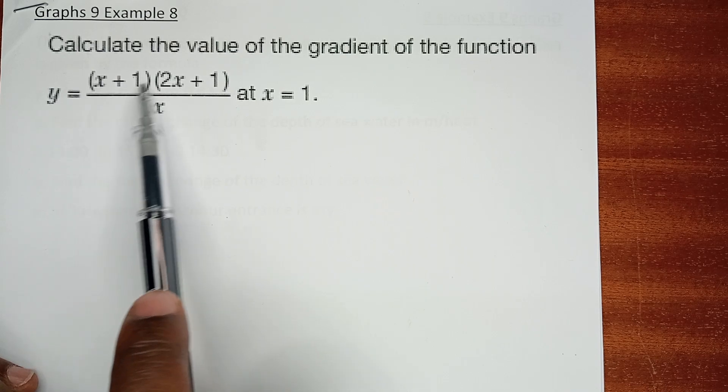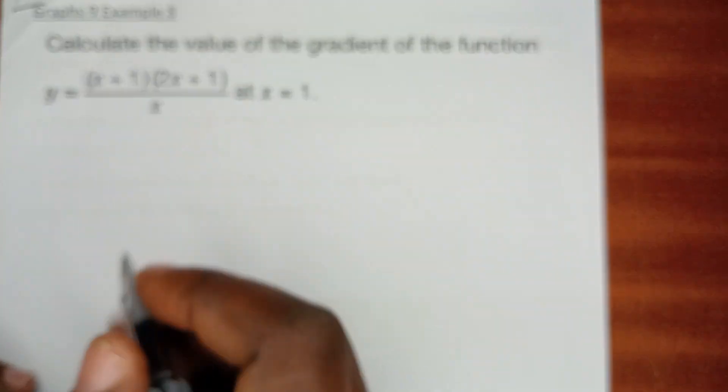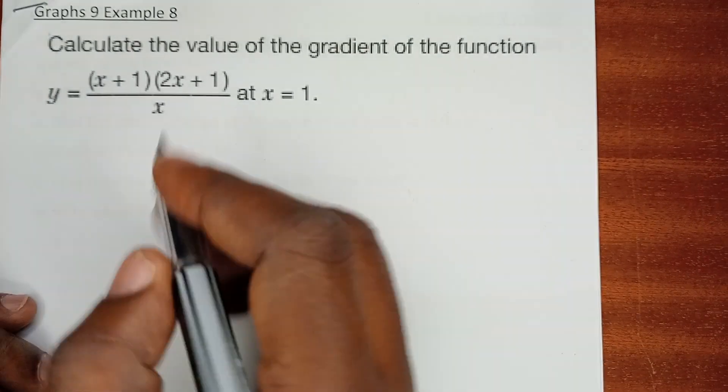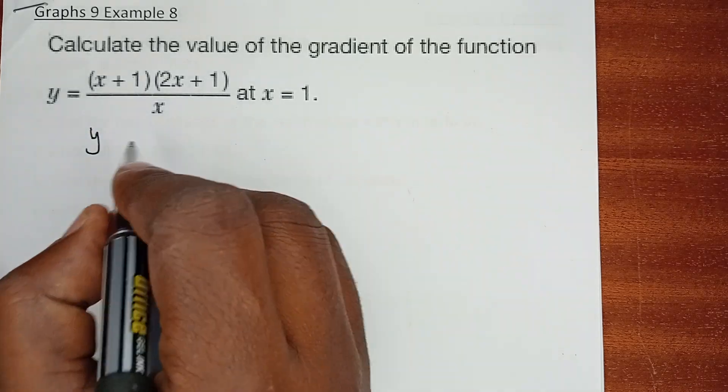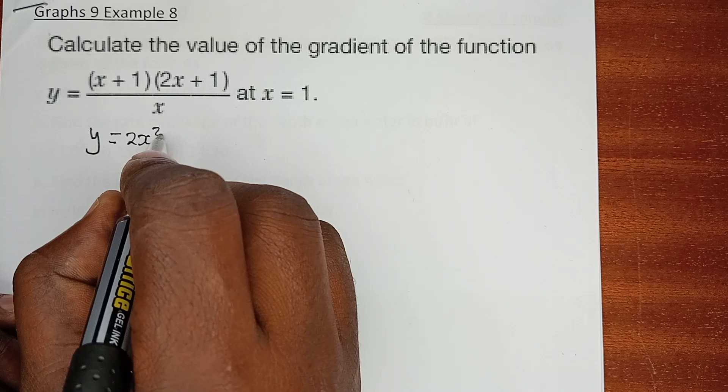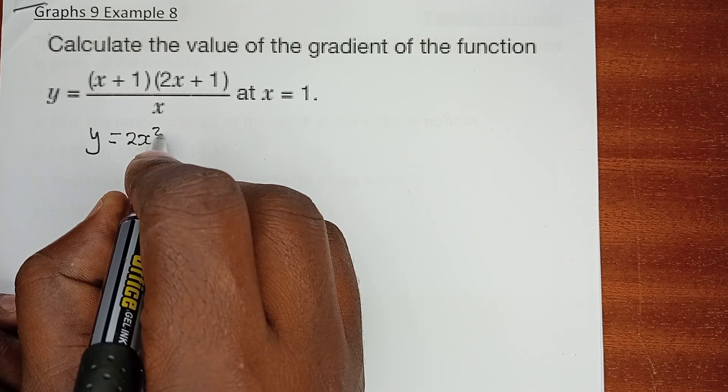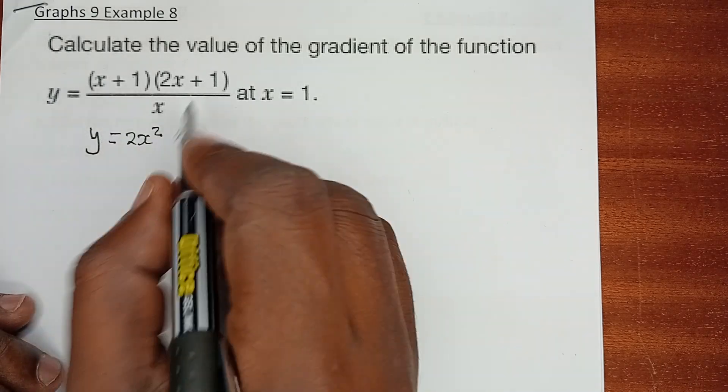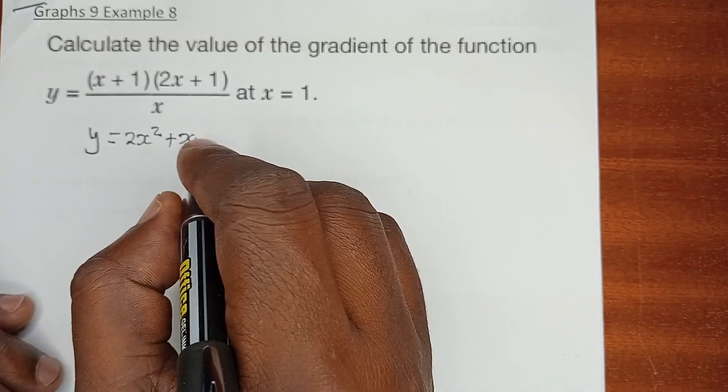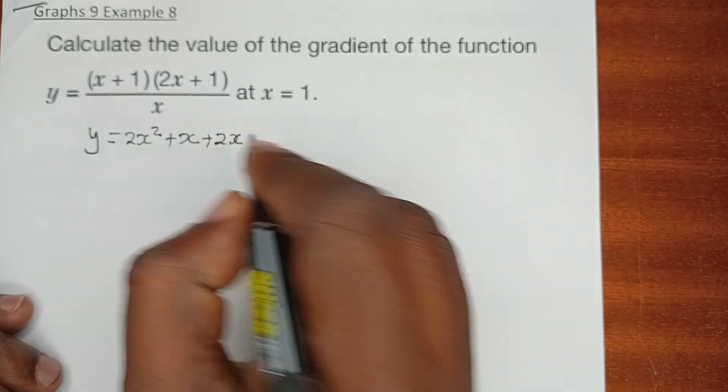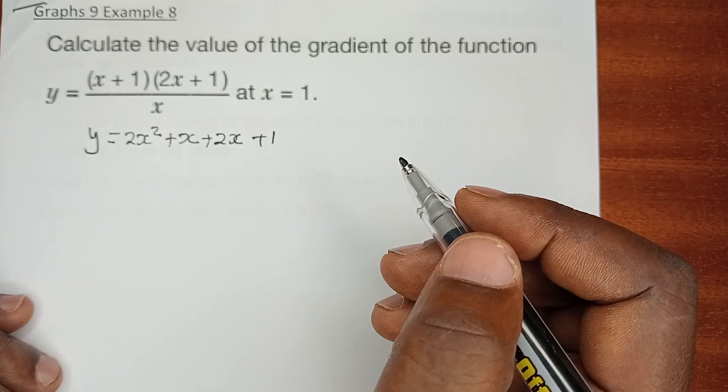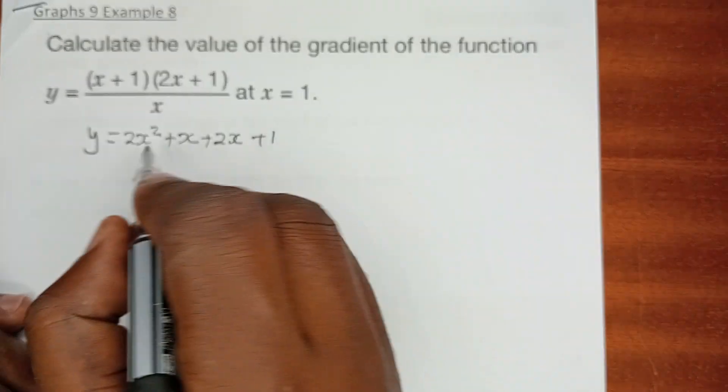Let's first of all open this bracket. Using FOIL, x times 2x, we have the function which is y equals 2x squared plus x plus 2x and of course plus 1, all this over x.